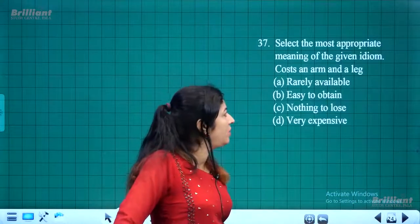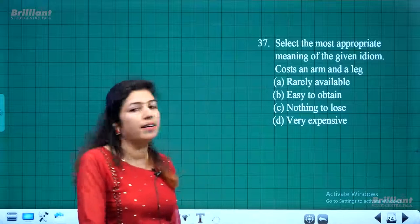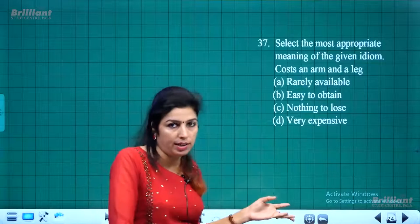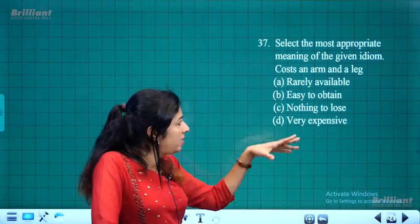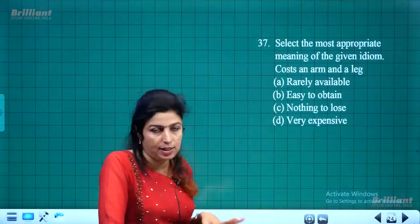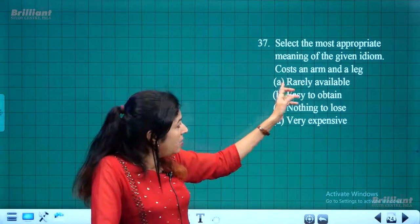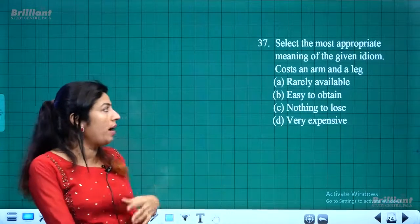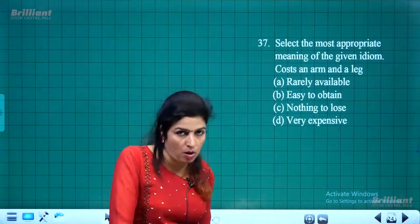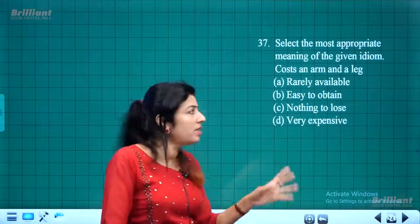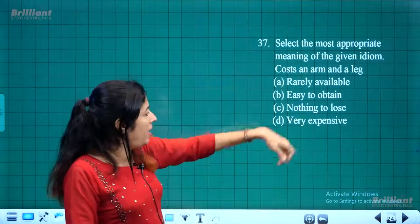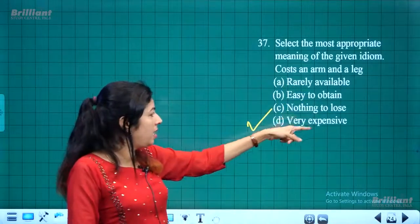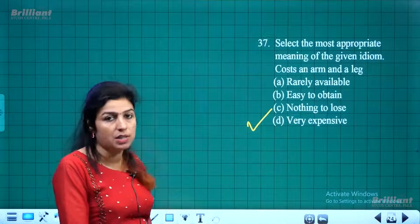Idiom meaning — 'cost an arm and a leg': This is not given in a sentence context, just the idiom alone. The meaning is that something is very expensive — you pay a huge amount for it. Not rarely available, not easy to obtain, not nothing to lose — simply 'very expensive.'